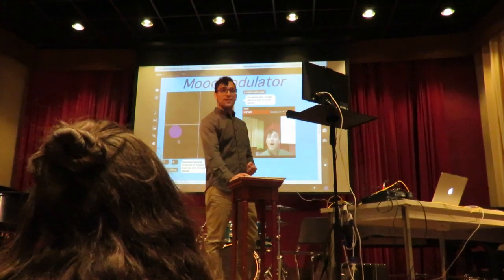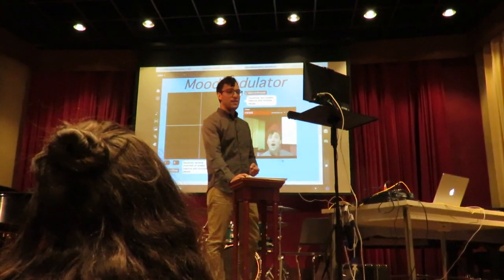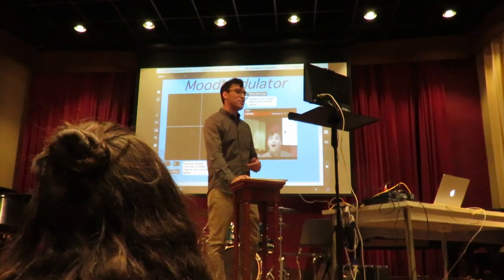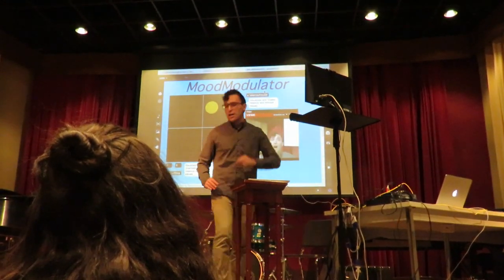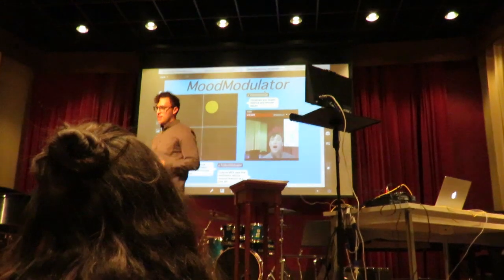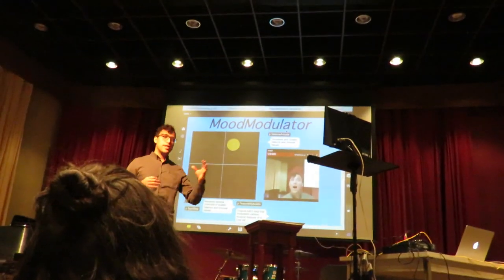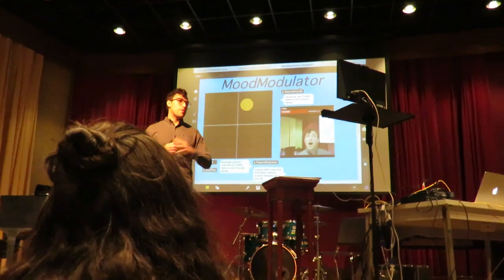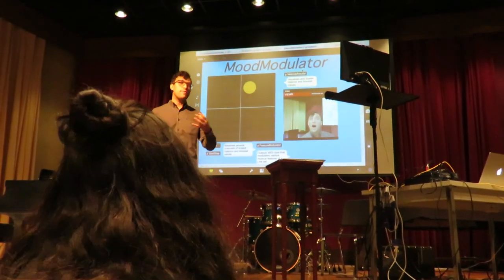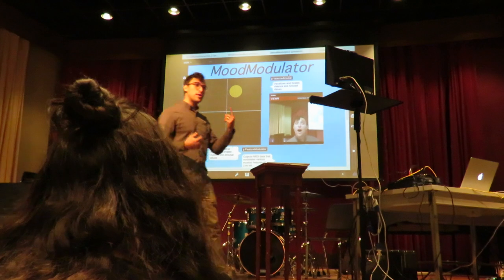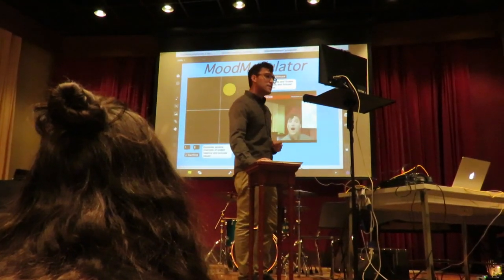Sadness would be low valence, low arousal. And serenity would be high valence, low arousal. The way I applied this musically is by mapping different musical structures based on the location of these different values on the graph. I'll play the default template song for you, then I'll modulate it using my facial expressions. Let's hear it.